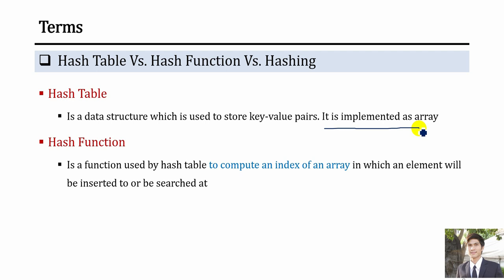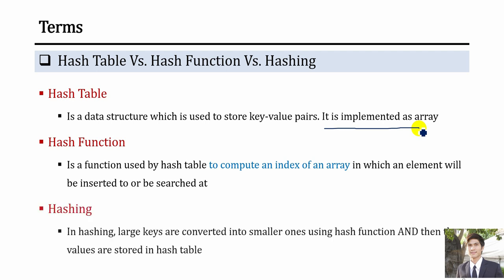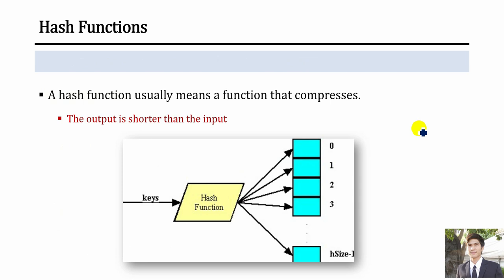For example, you have an array and a number you want to insert. Based on hash table rules, you calculate the index through the hash function, and then that number is inserted at the index position calculated by the hash function. In hashing, large keys are converted into smaller ones using the hash function, then stored in the hash table. This gives you an overview of how the hash function works — it is a kind of function that compresses your data into a smaller size so it fits into your array.